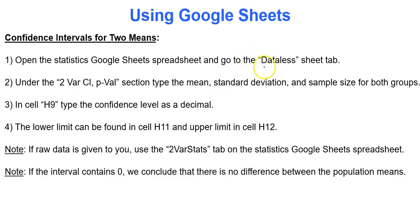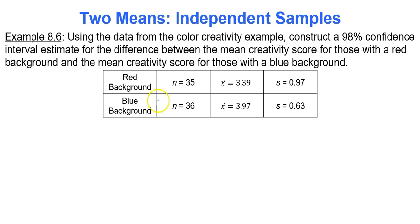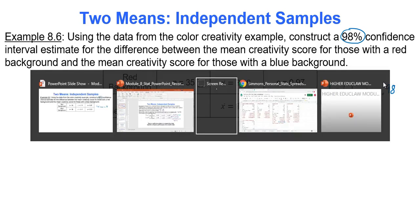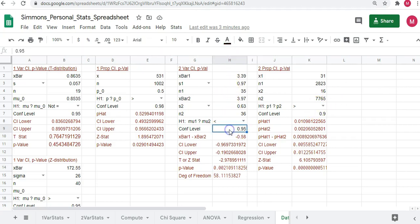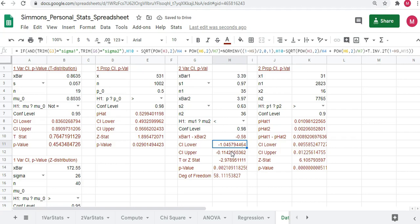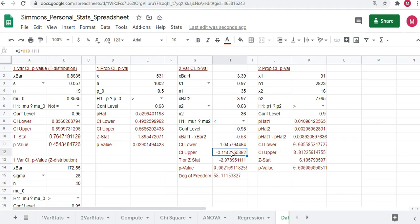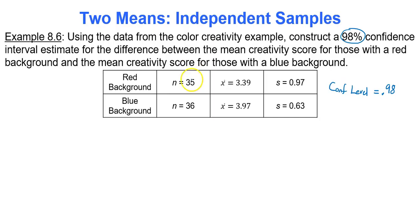To make a confidence interval for two means, go to the data list tab, same area, and input the confidence level. Using the same data from the color-creativity example, let's construct a 98% confidence interval estimate. The confidence level is 0.98. In Google Sheets, with our data already entered, type in 0.98 as the confidence level and press enter. You get a lower limit of negative 1.05 and an upper limit of negative 0.11.